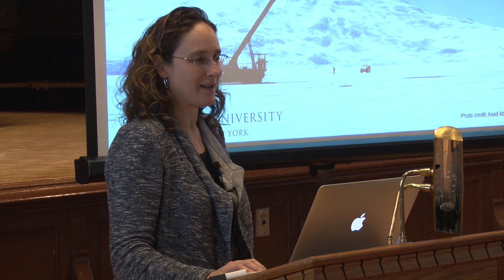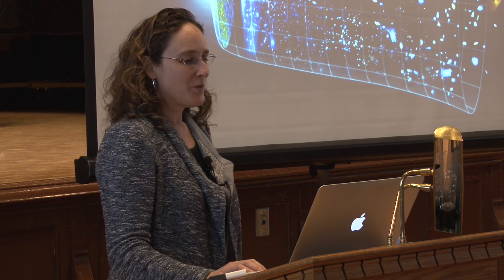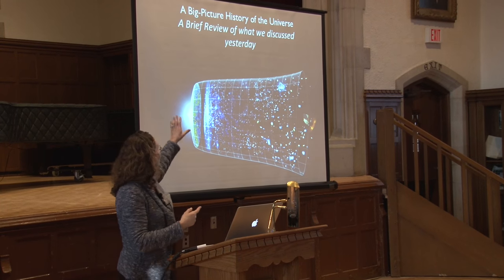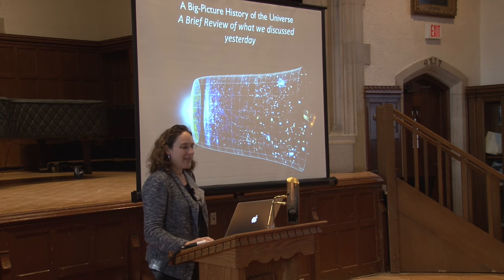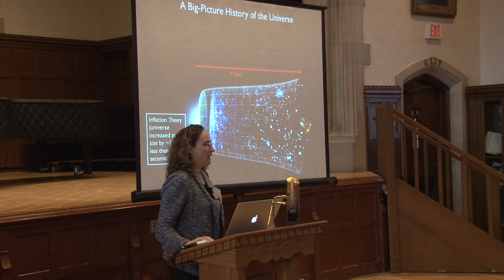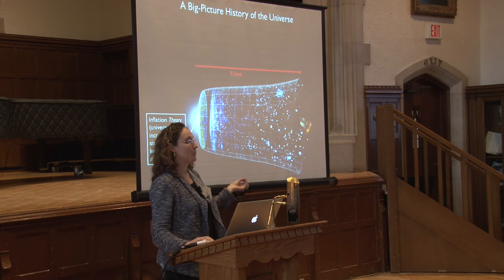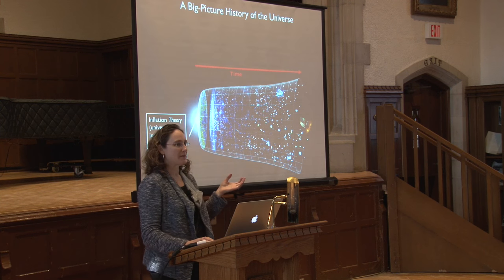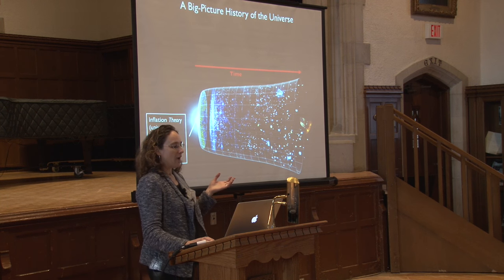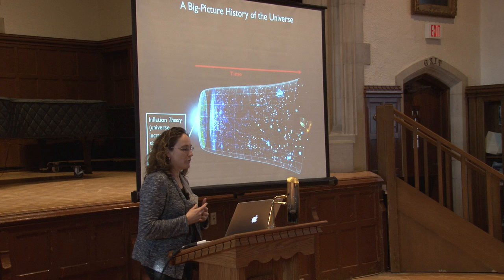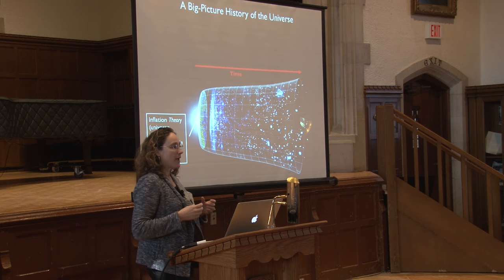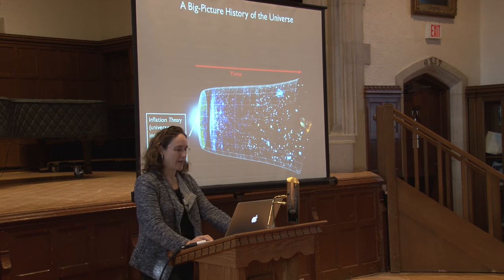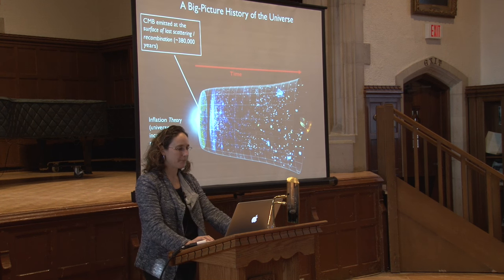The big picture is that our four-dimensional universe came from somewhere, and the theory is that there was an inflationary epoch when the universe was something like 10 to the minus 35 seconds old, during which the universe increased in size by many orders of magnitude and microscopic quantum fluctuations were stretched to macroscopic size, laying the seeds for the formation of the structure we see today.